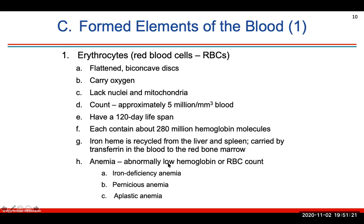Anemia is an abnormally low hemoglobin or red blood cell count, meaning your red blood cells are not carrying enough oxygen. Types include iron deficiency anemia, pernicious anemia (an immune disorder), and aplastic anemia. Iron is involved in the molecular structure of the hemoglobin molecule, which is why anemic individuals may have low iron levels — iron is needed in the hemoglobin protein structure.